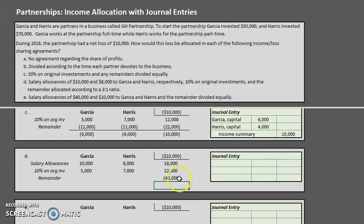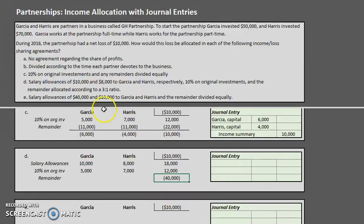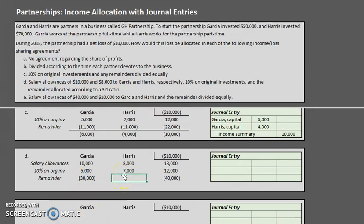We needed to allocate negative $10,000, but we allocated $18,000 and $12,000, so we're dealing with a remainder of negative $40,000. Don't let this throw you off — follow the steps, because unless we do this we won't equal out at the end. This $40,000 remainder is allocated according to a 3-to-1 ratio, giving four total parts. Garcia gets three-fourths: 3/4 times negative $40,000 means Garcia absorbs negative $30,000. Harris gets one-fourth: 1/4 times negative $40,000 means Harris absorbs negative $10,000.